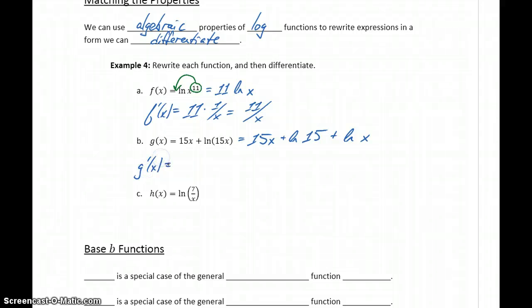So now we can differentiate term by term to get 15 plus the natural log of 15 is just a constant, so that's 0, plus the natural log of x. The derivative of that will be 1 over x. So we get 15 plus 1 over x.